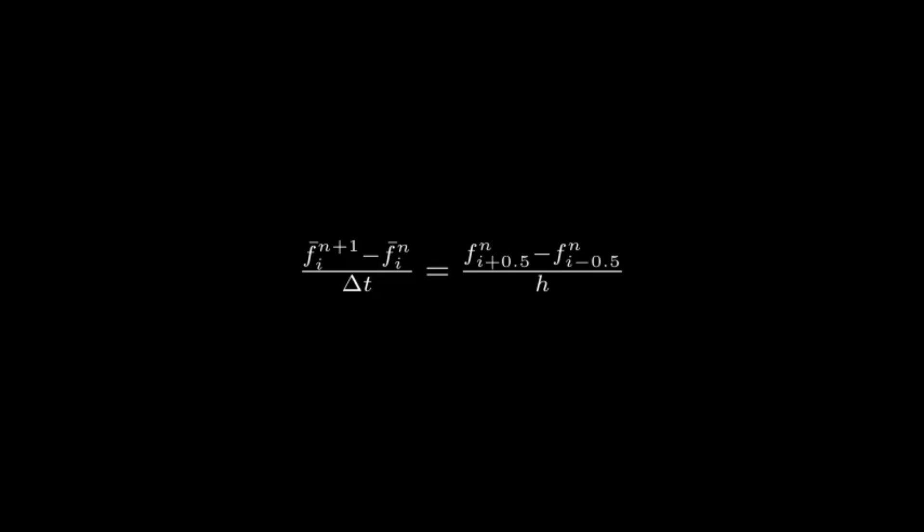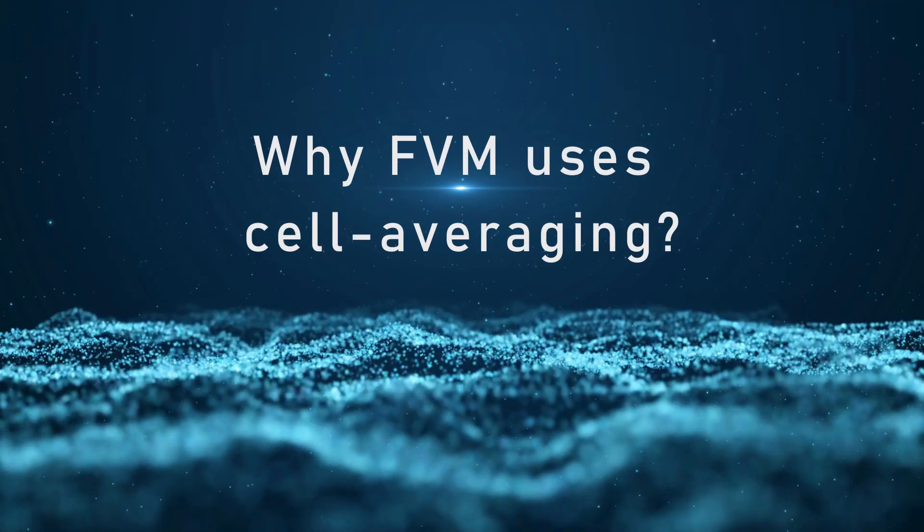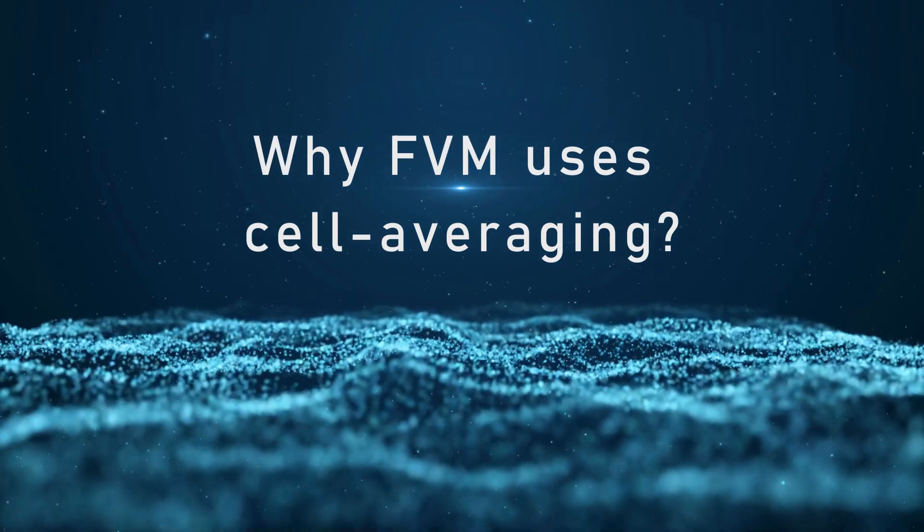On the left side, you can see a bar indicating we are using cell average quantity. In another video, we shall see how we get the cell average term on the right-hand side and why FVM is called conservative discretization. If you are interested in the conservative form of PDE, I have made a video I gave in the description.